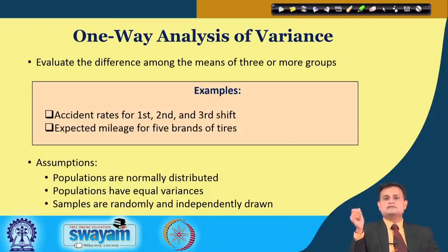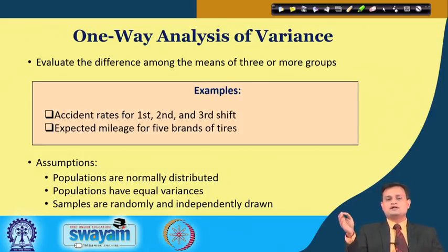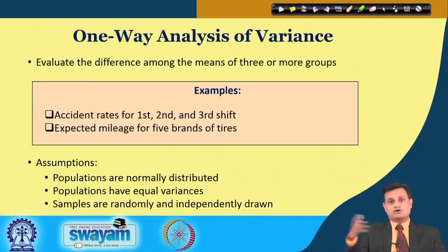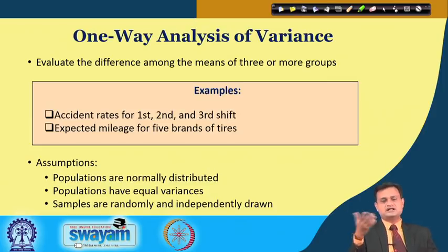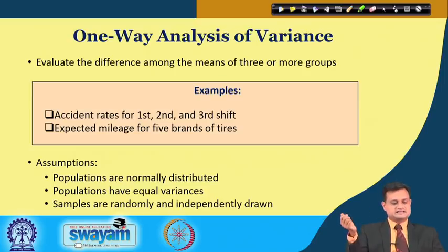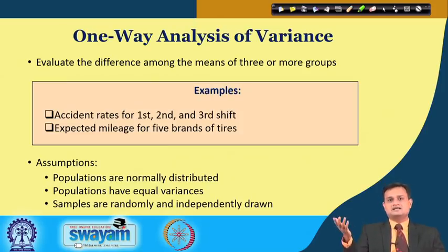The fundamental assumptions for ANOVA are: first, populations are normally distributed — so if I have mu1, mu2, mu3, mu4, mu5 to be compared from different populations, all those populations are normally distributed. Second, populations have equal variances — there is no funnel-shaped distribution of the error; my populations have equal variances. Third, samples are randomly and independently drawn — there is no subjectivity bias when I draw the sample for the purpose of my analysis.